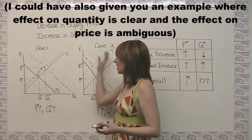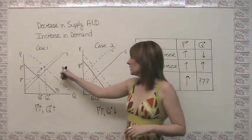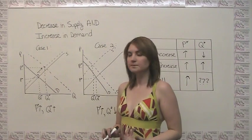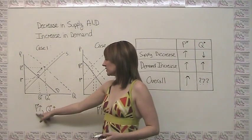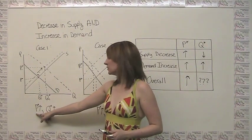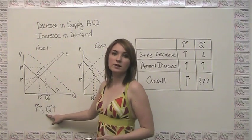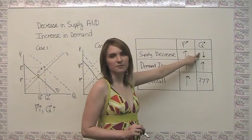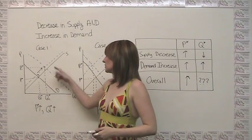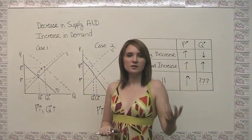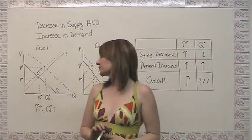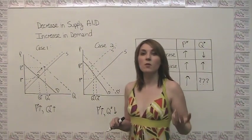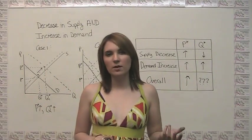That ambiguity is illustrated graphically with two diagrams. In the first case, we have a small decrease in supply coupled with a large increase in demand. As expected, we see an increase in equilibrium price. We also see an increase in equilibrium quantity, because the demand effect is larger than the supply effect. It also depends on the relative elasticities, as discussed earlier. Drawing the graphs helps you understand what we know and what we don't know about the relative changes in price and quantity.